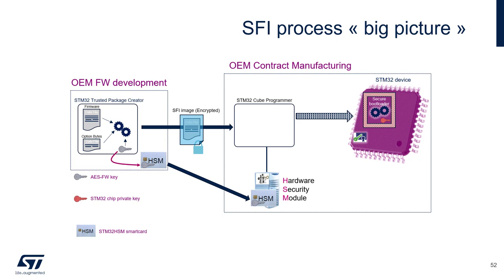Now let's describe how the STM32 gets the firmware encryption key. The programmer first requests the certificate of the STM32. This certificate was programmed inside the ST factory and signed with ST's secret key. The certificate is transmitted to the smart card, which can verify its authenticity thanks to ST's public key. The smart card then uses the STM32 public key provided in this certificate to encrypt the firmware encryption key, and this encrypted data is put in a license file. The programmer retrieves this license file from the smart card and forwards it to the target.